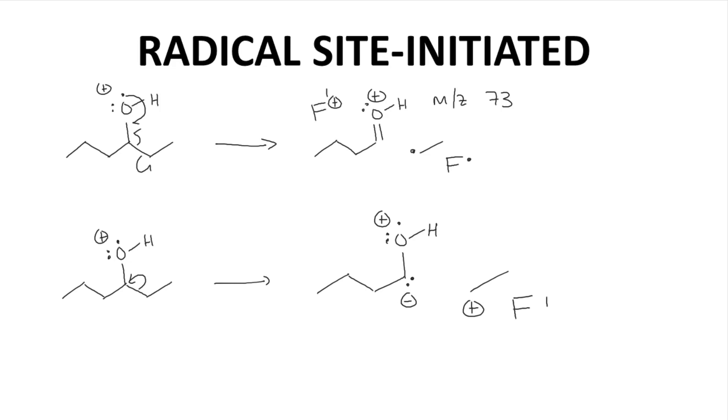One fragment is a cation. The other fragment is net neutral and will just be considered a radical. The fragment that we will observe will be this one, the ethyl cation. It has an mz value of 29.